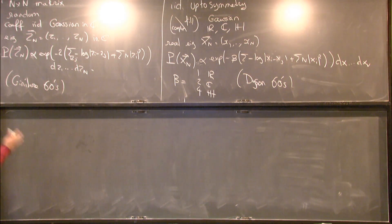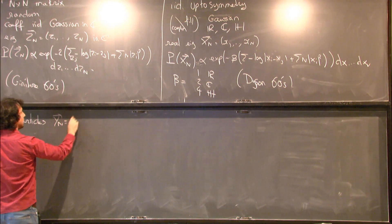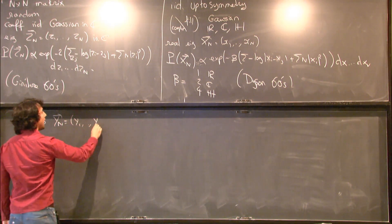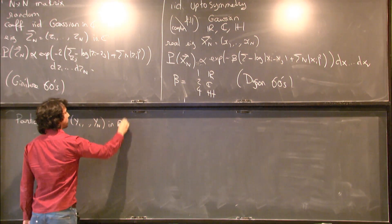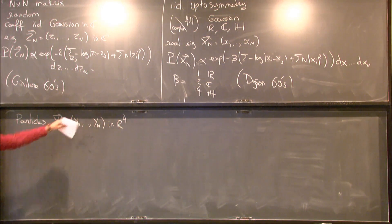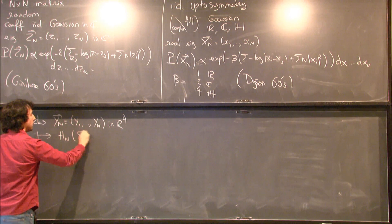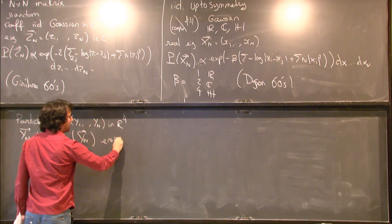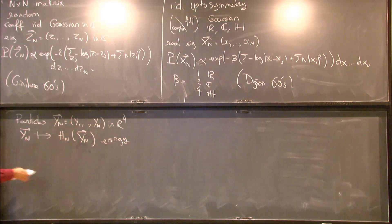And now let's move away from the random matrix theory world. Let's do some basic statistical physics. Assume we have n particles in R^d. That's their positions in R^d. And for any state, so for any n-tuple of position, I can define some energy, which is given by the physical laws of the system.